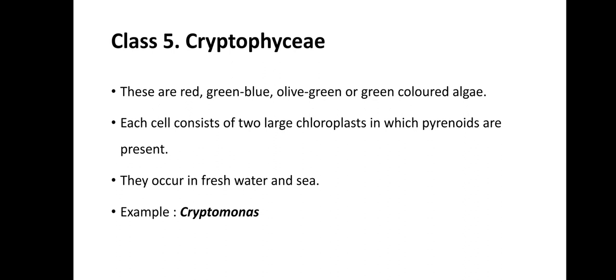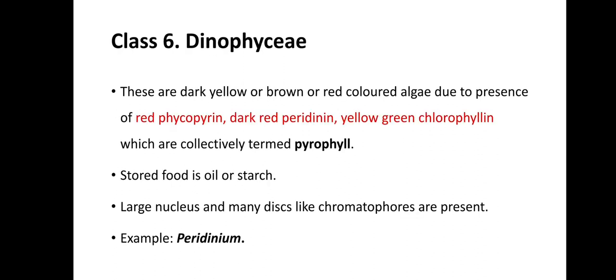Class 5 is Cryptophyceae. These are red, green, blue, olive-green, or green-colored algae. Each cell consists of two large chloroplasts in which pyrenoids are present. The species of class Cryptophyceae are characterized by the presence of two large chloroplasts. They occur in freshwater as well as in marine ecosystems. For example, Cryptomonas.